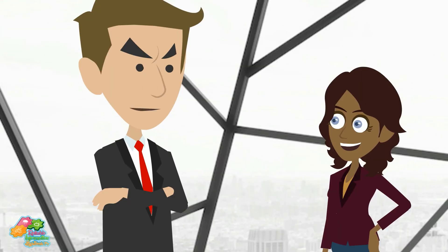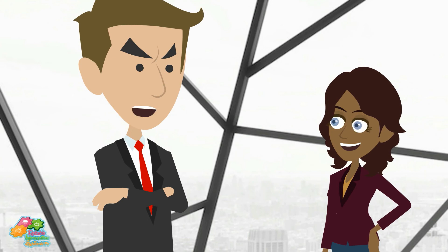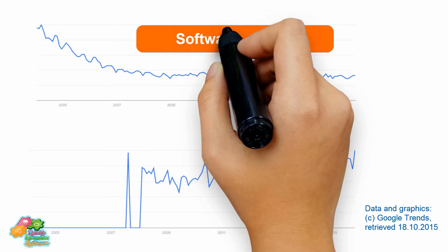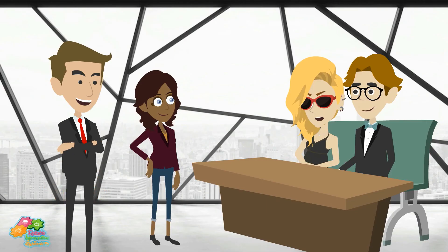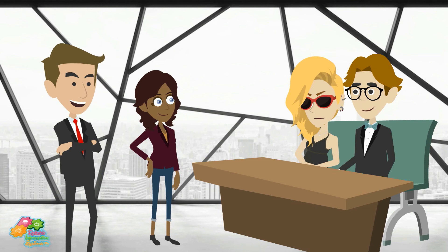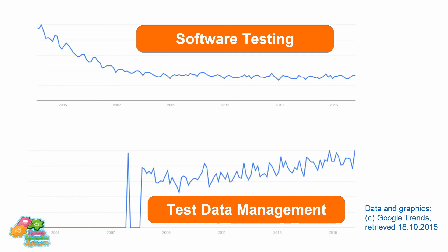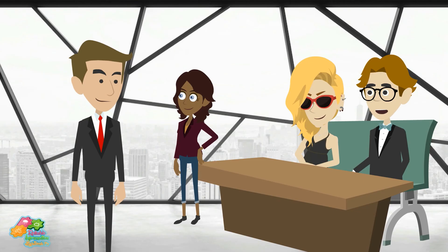Did you check with Google Trends? Try the search term 'software testing' and compare the result with 'test data management.' This is really interesting. The interest in software testing dropped till 2007 or 2008. Afterwards, the interest remained more or less stable till today. The curve for the search term 'test data management' is completely different — nobody cared till 2008 and 2009. Then, suddenly, people got interested and stayed interested till today.